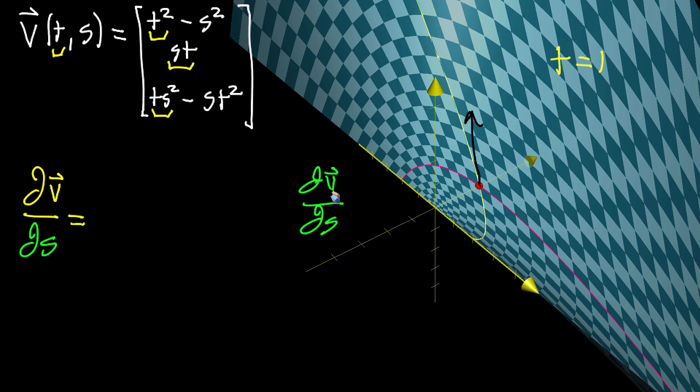Let's actually compute it for this case. If we look up here, the T value, which used to be a variable when we were doing it with respect to T, now looks like a constant, so its derivative is zero. Then negative S squared with respect to S has a derivative of negative 2S. For ST, S is the variable and T is a constant, so the derivative is just T. For TS squared, T is constant and S is variable, so it's 2TS. For the last term, S is the variable and T squared is a constant.